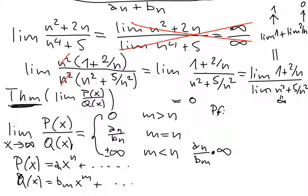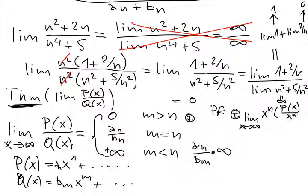The proof of this is okay, so let me denote this as case number 1. For case number 1, what we know is that the denominator is much bigger. So what we are going to do is take the limit as x goes to infinity, and take x to the n out of p, getting p(x) over x to the n inside, as it was here. And we do the similar thing in the denominator.